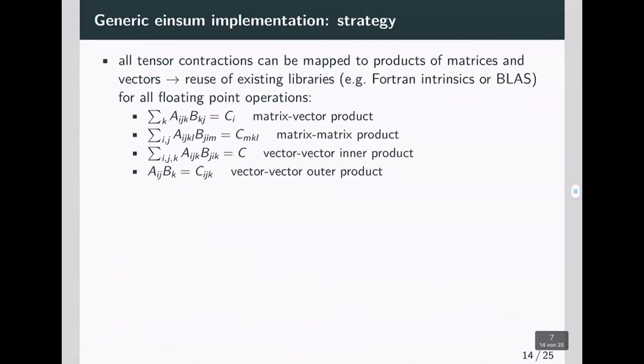What is the strategy for generic implementation? The first thing you realize is that all tensor contractions can be mapped to products of matrices and vectors. And because those operations are already implemented in existing and optimized libraries such as the Fortran intrinsics or BLAS library, you can reuse those functionalities. Here you see a couple of examples of tensor contractions and how to map to matrix products.